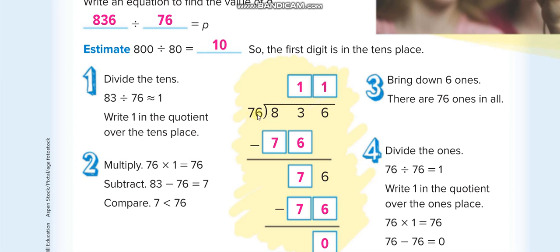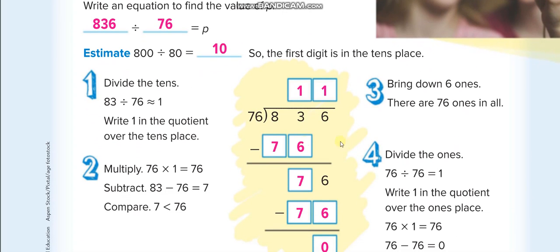When we divide with a two-digit divisor, we only take two digits from the dividend to divide — unless the first two digits are less than the divisor, in which case we include the third one also. But in this case, the first two digits are more than the divisor, so we don't need the third digit.